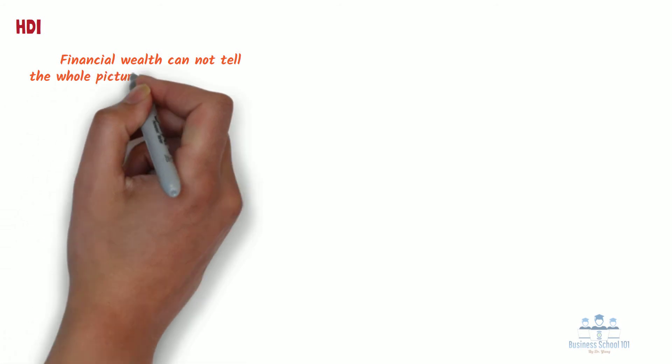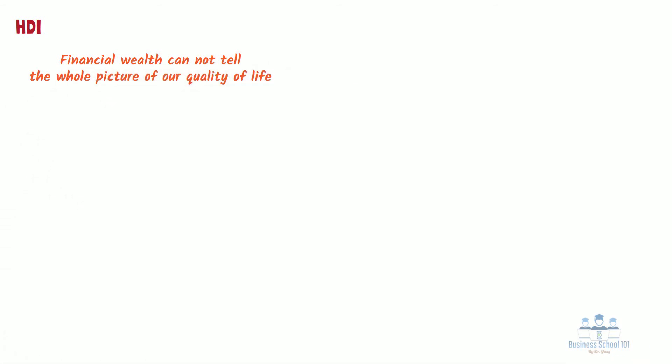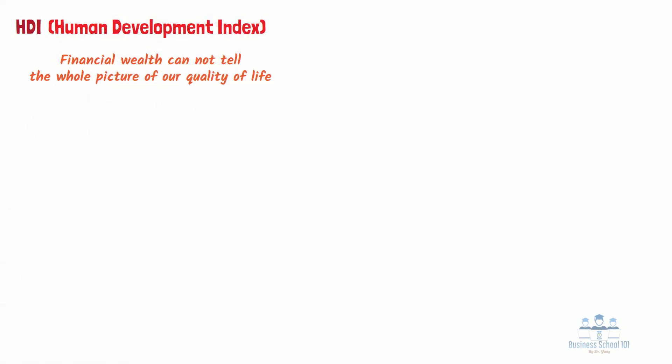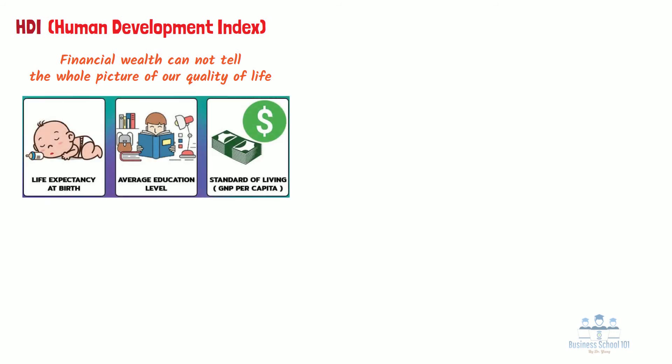Third, HDI. Both GDP and GNI are used to evaluate and rank a nation's economic development. However, financial wealth cannot tell the whole picture of our quality of life. There are many other factors such as life expectancy and education that are considered critical to a country's social welfare. To address this limitation, the Human Development Index, or HDI, was created to emphasize that people and their capabilities should be the ultimate criteria for assessing the development of a country, not economic growth alone. The HDI is an indicator that focuses specifically on people and their capabilities to assess the development and welfare of a nation. It is comprised of three indexes. First, the life expectancy index, based on life expectancy at birth, which is a function of healthcare.